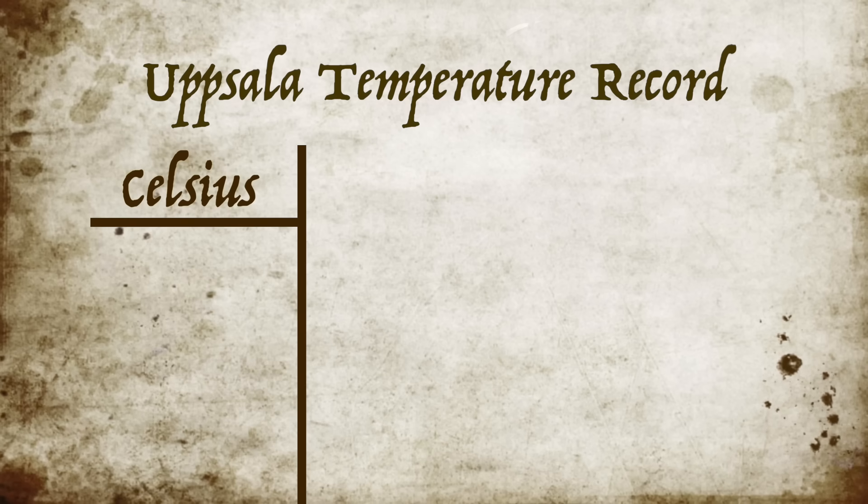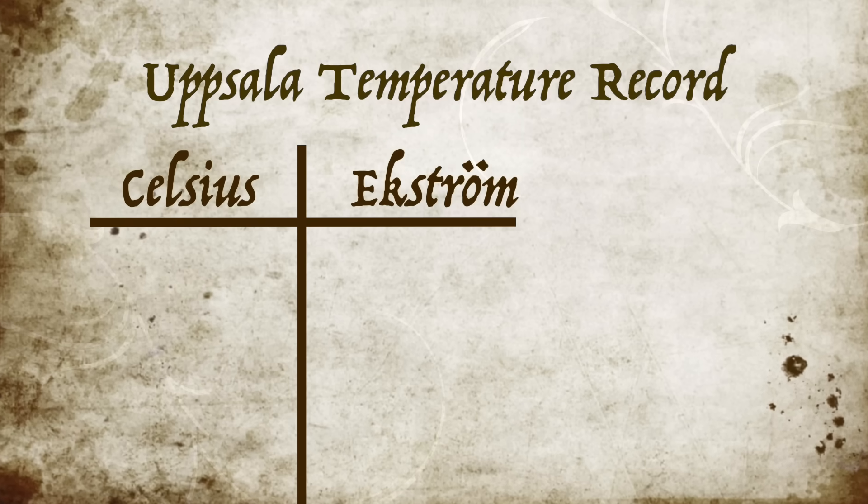When Celsius died of tuberculosis in 1744, he was still using this inverted scale. So who reversed it? Who do we have to thank for the modern Celsius temperature scale? In 1745, just a year after Celsius's death, a new column appears in the Uppsala temperature record using the modern scale, and at the top it's got the heading Ekstrom.